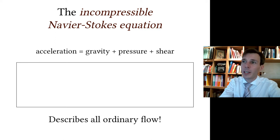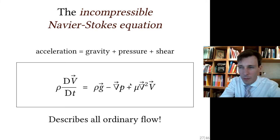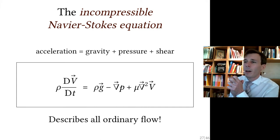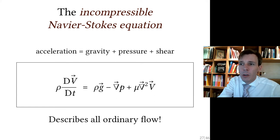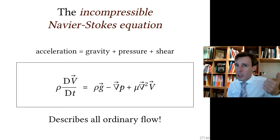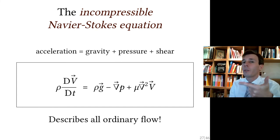This leads us to the incompressible Navier-Stokes equation: the acceleration of a particle is due to gravity, pressure, and shear. We replace the divergence of shear with the Laplacian of velocity, so the unknown velocity field appears twice — once in the acceleration term and once in the Laplacian term. This describes all ordinary flow, under two conditions: incompressible flow (low Mach number, below roughly 1000 km/h) and Newtonian fluid (constant single-value viscosity — water, air, most common fluids).